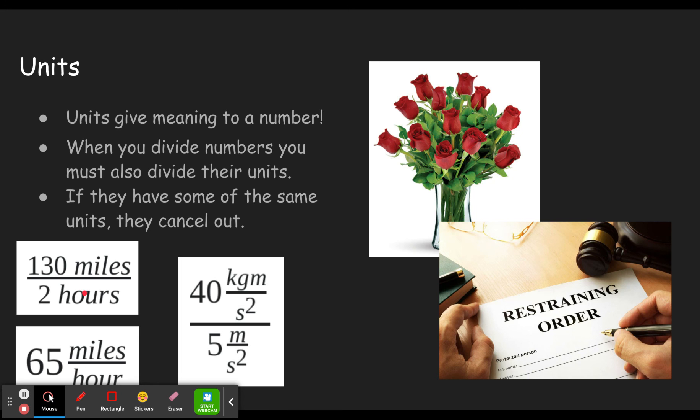However, if you have something a little bit more complicated, it might look like this. We might have a force, which could be measured in kilogram meters per second squared, and our change in our y-value was 40 kilogram meters per second squared. Our change in the x-value was 5 meters per second squared. Okay, so of course the 40 divided by 5 gives us 8. But now as we look at this, we see we've got meters up here in the numerator, we got meters in the denominator, and so they cancel out.